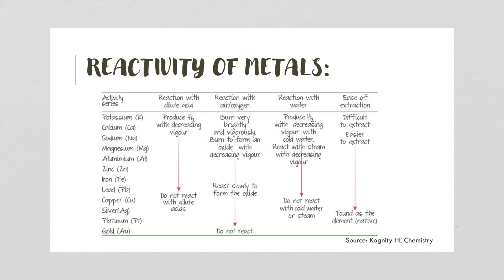The next group burns to form an oxide with decreasing vigor as you go down, then some react slowly to form an oxide, and platinum and gold do not react at all. For reaction with water, potassium and similar metals produce hydrogen gas with decreasing vigor in cold water. The next ones react with steam, again with decreasing vigor, and lower down they don't react with cold water or steam at all. As for ease of extraction, potassium, calcium, and sodium are hard to extract because they're so reactive. Further down they become easier, and eventually metals are found as the native element because they aren't reactive.